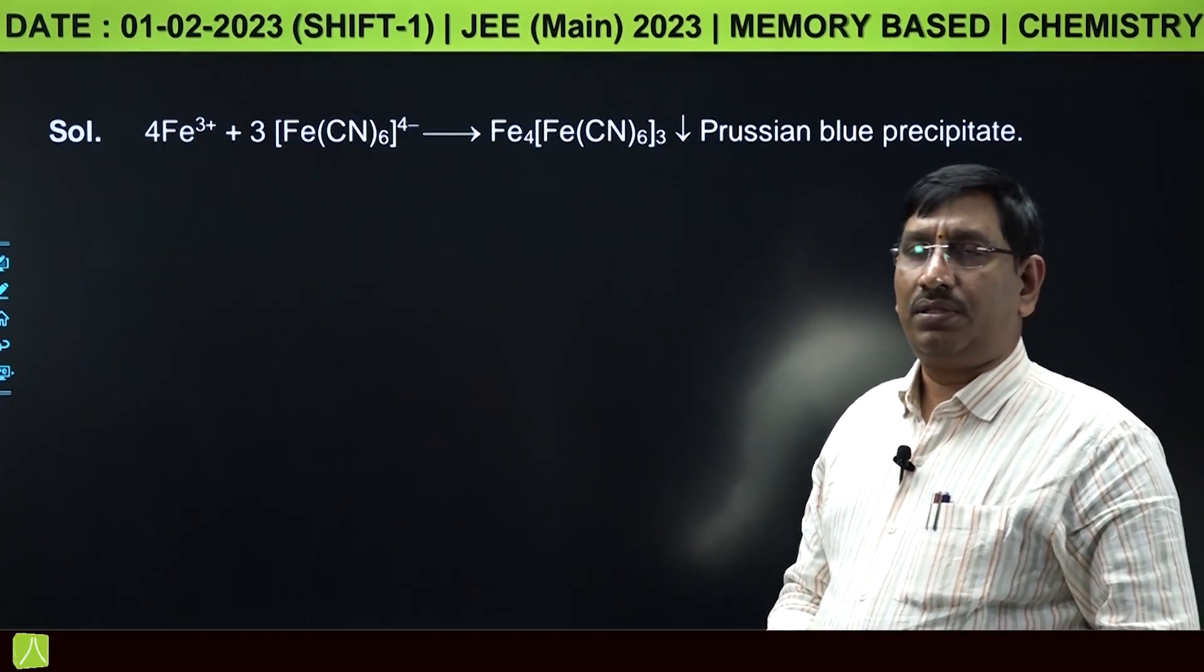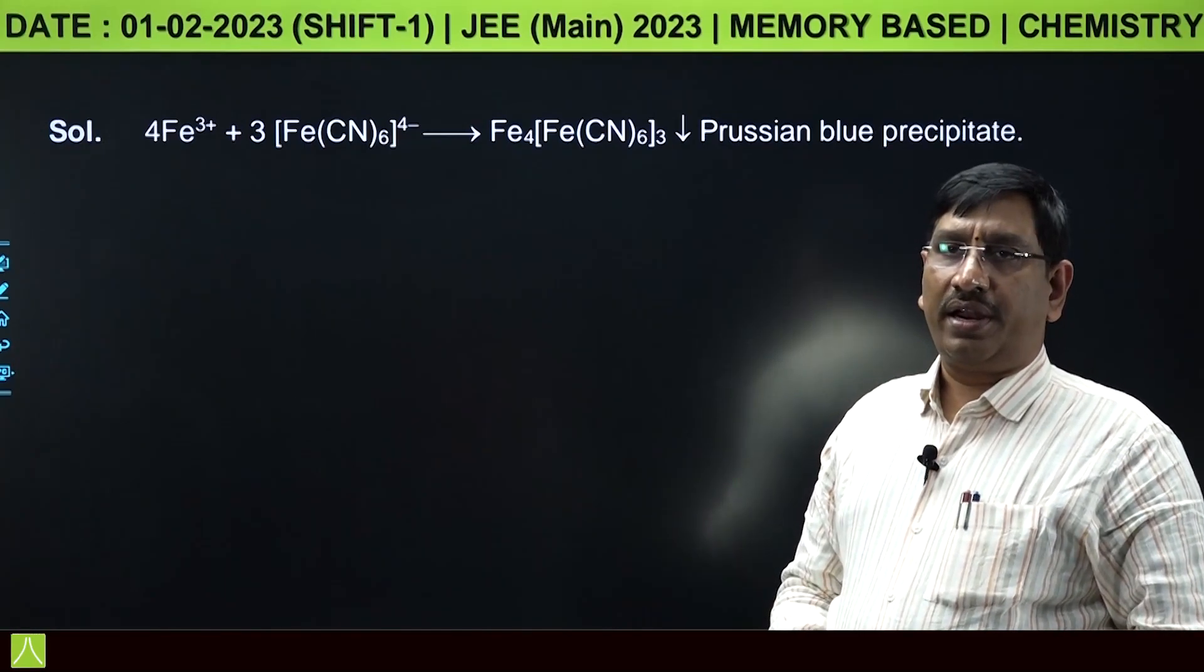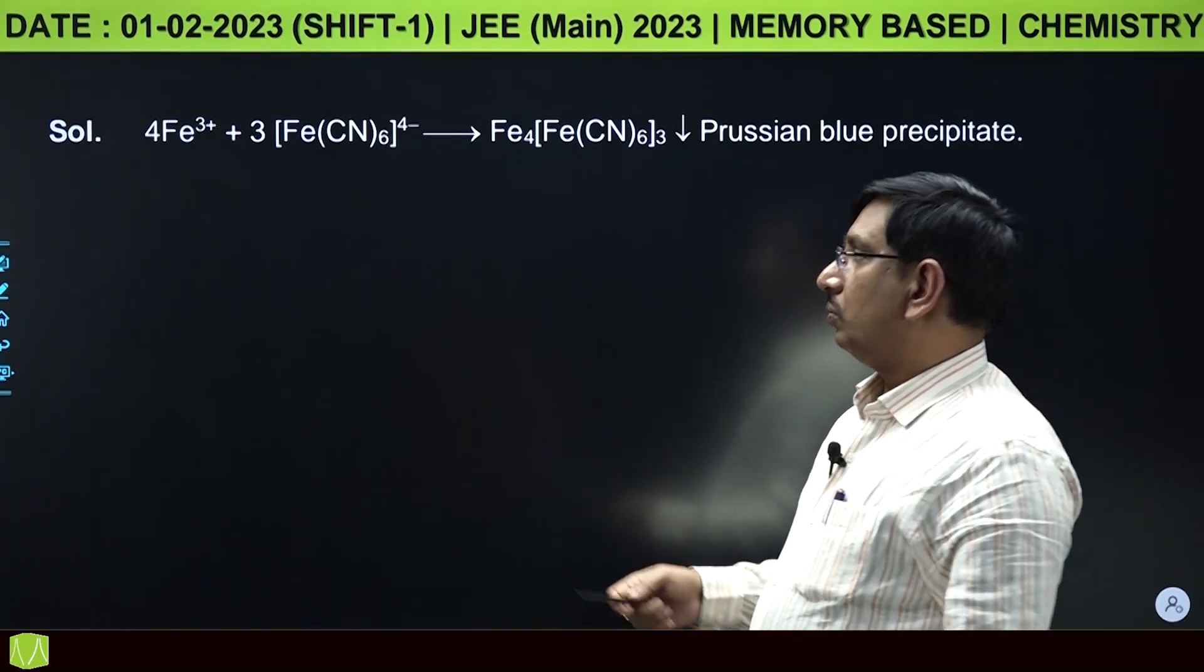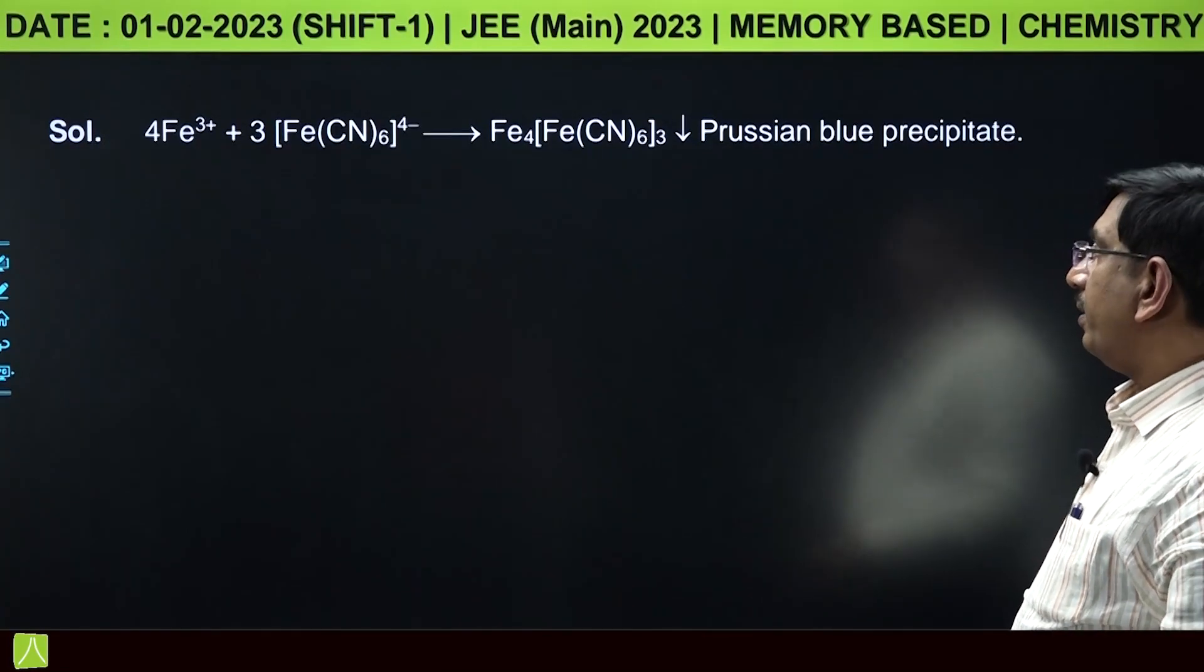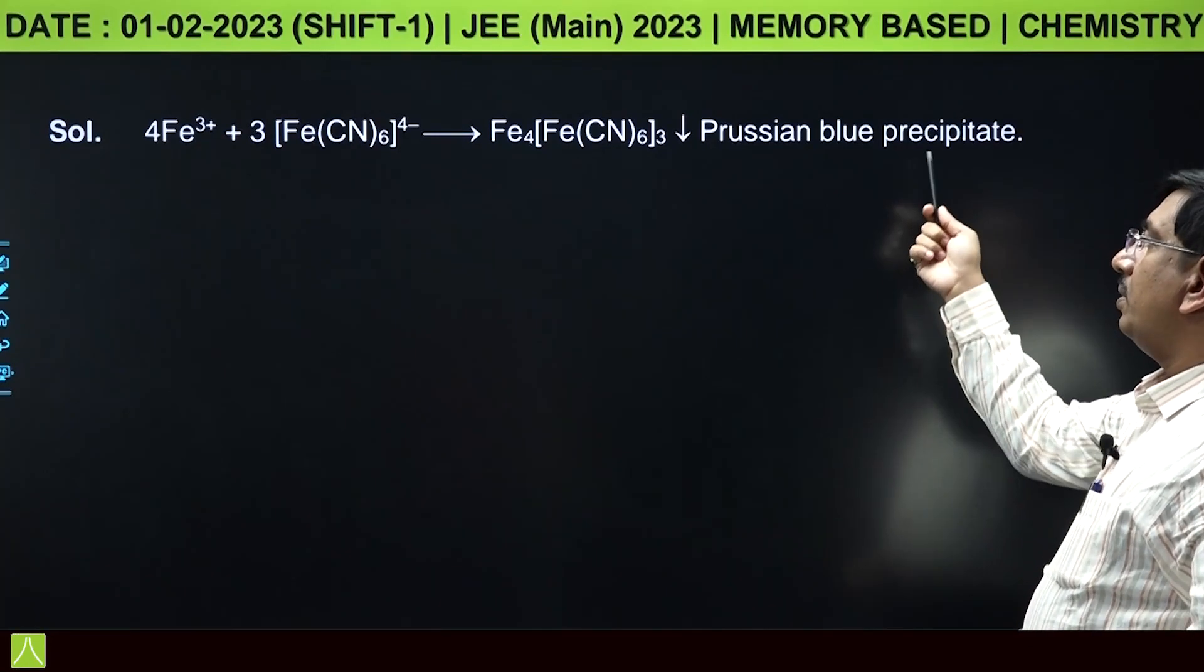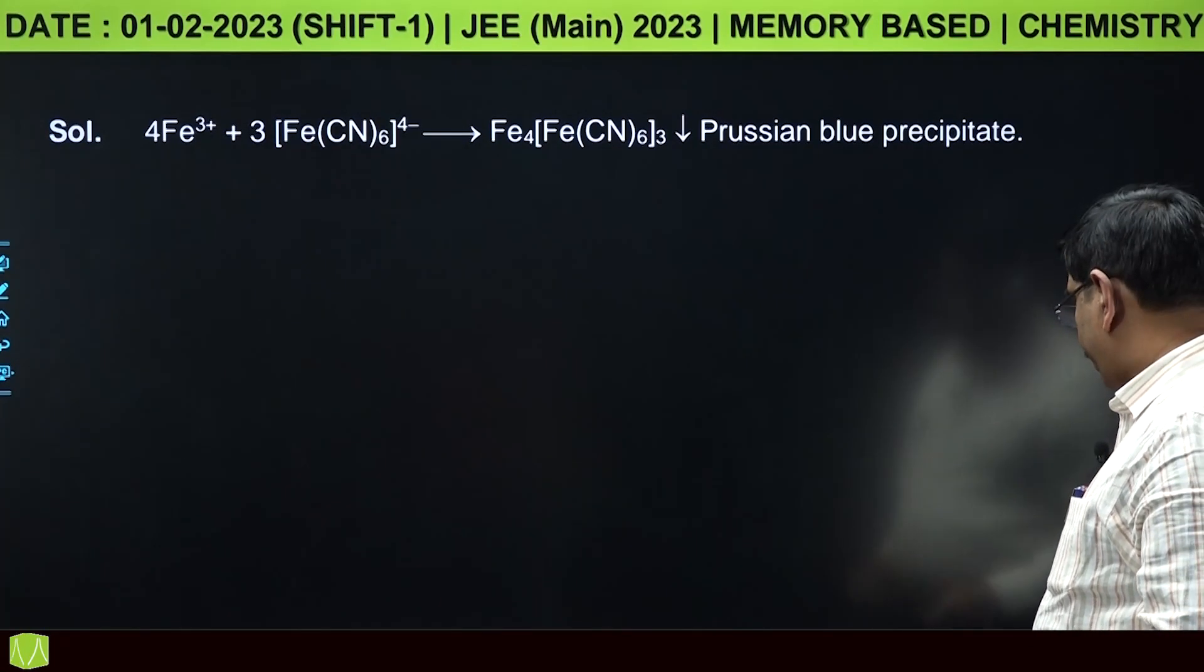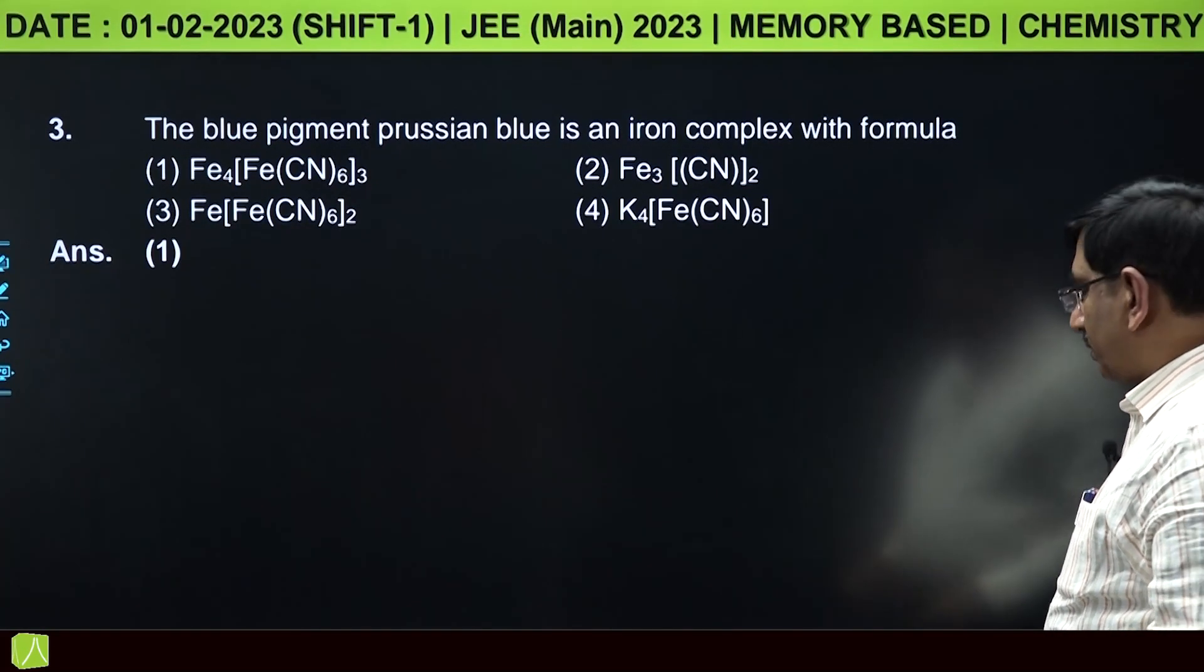For Fe3+ confirmation, when potassium ferrocyanide solution is added, it converts into ferric ferrocyanide, and this gives Prussian blue color. Answer: Fe4[Fe(CN)6]3.